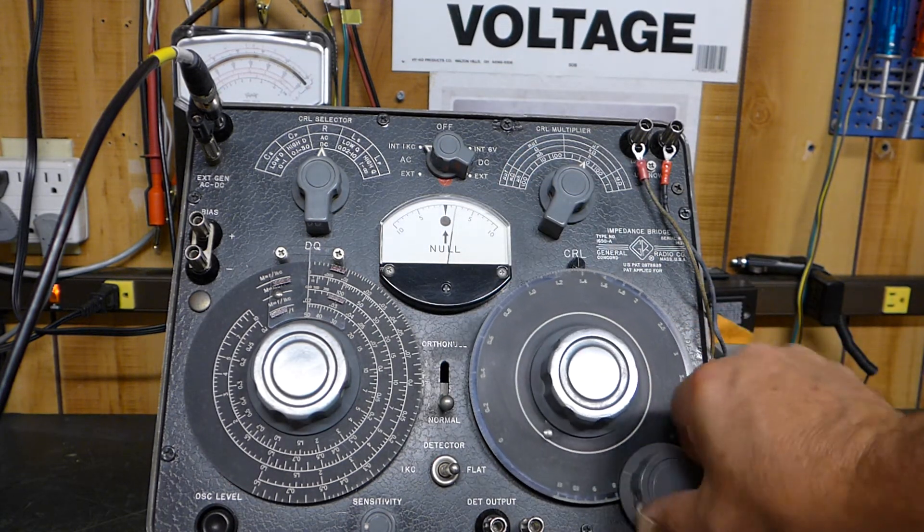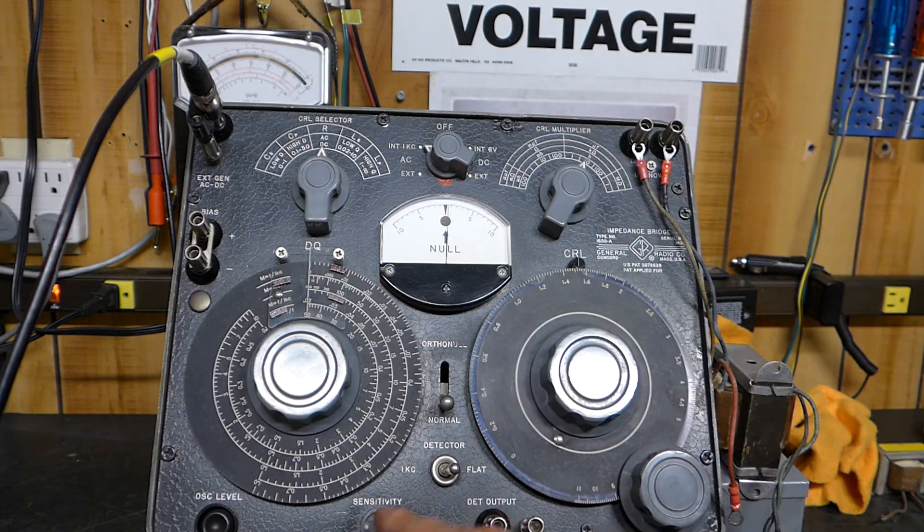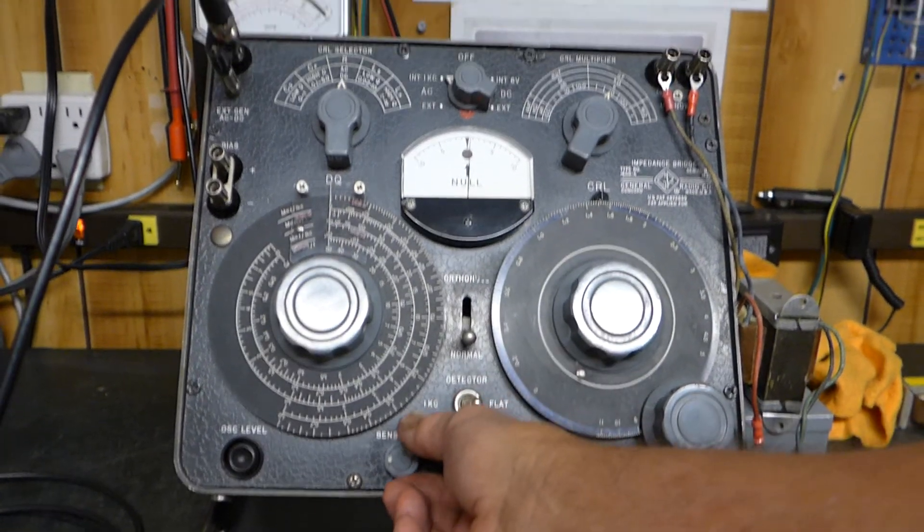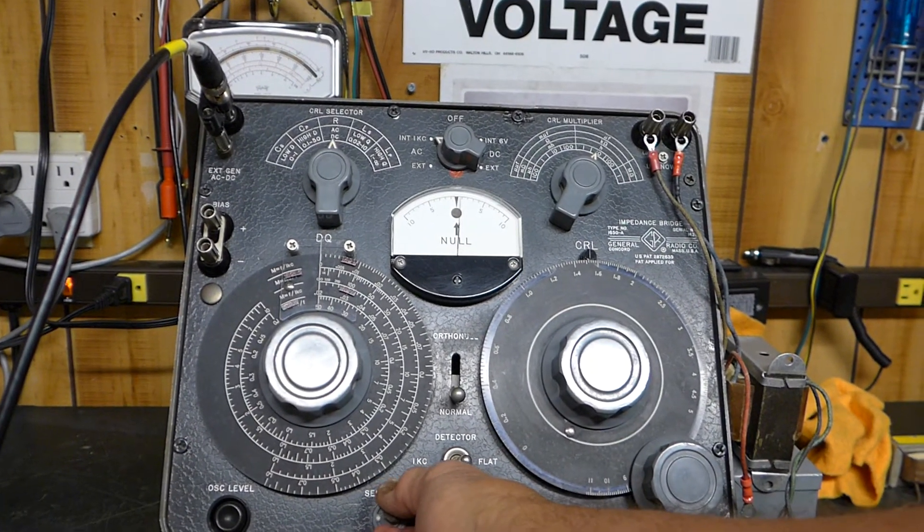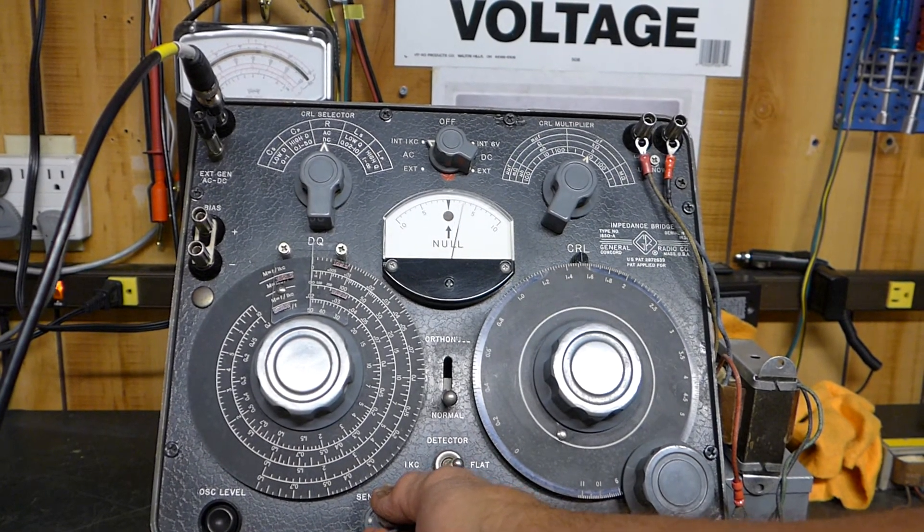You can increase the range on this by the sensitivity knob right here. We can increase the sensitivity and set it wherever we want, but what we want to do is set it high enough and low enough that we can actually detect a nice null.